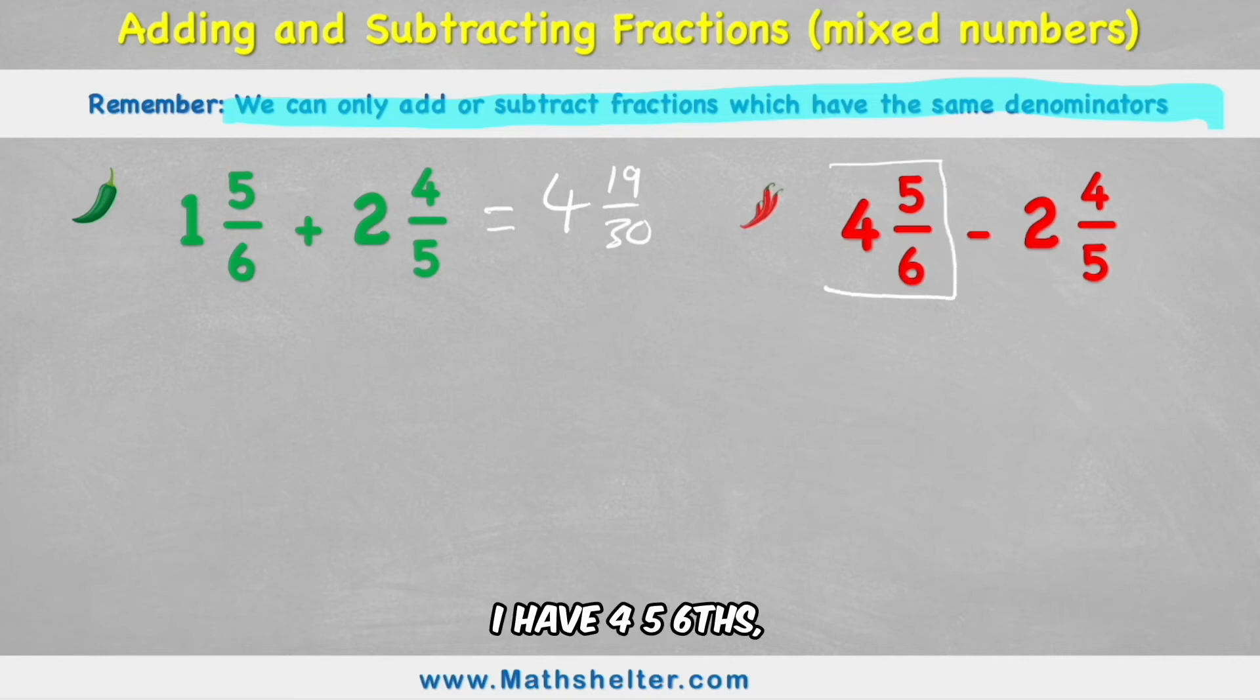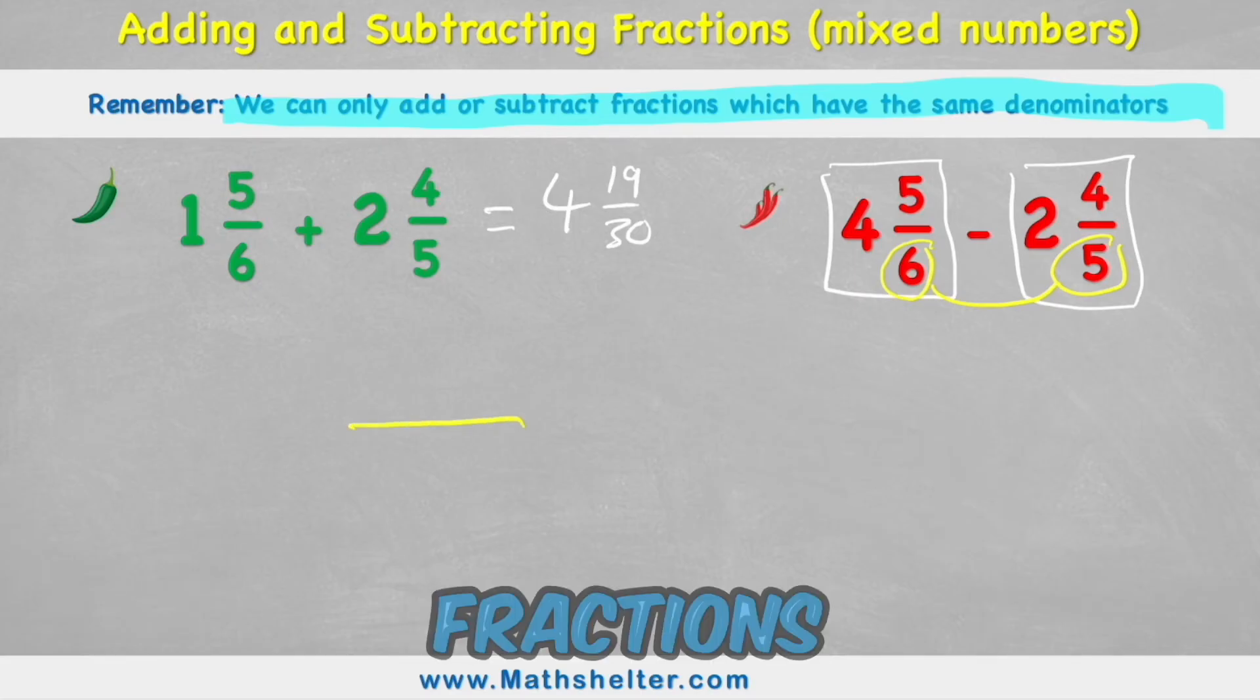I have 4 and 5 sixths subtract 2 and 4 fifths. So let's try and do this a bit quicker. And notice that if I multiply 6 times 5, I will get 30. So my new equivalent fractions will be out of 30.